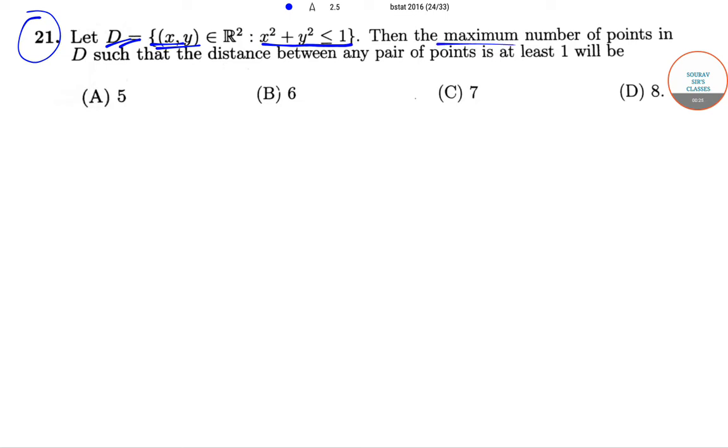Then the maximum number of points in D, in the set D, such that the distance between any pair of points is at least one will be given by: 5, 6, 7, and 8.